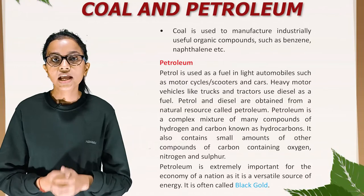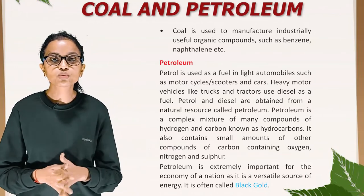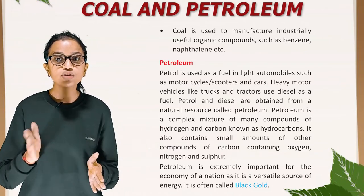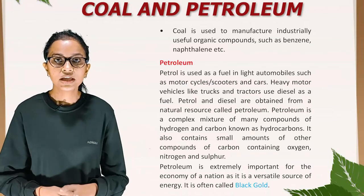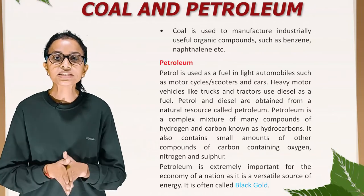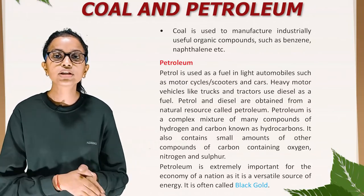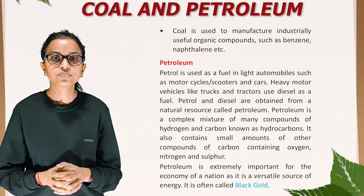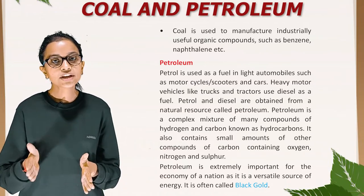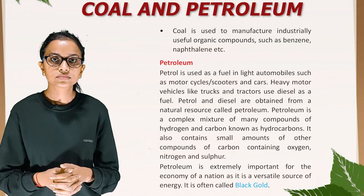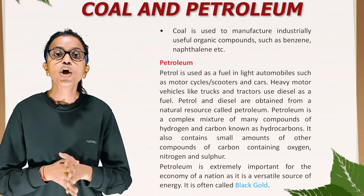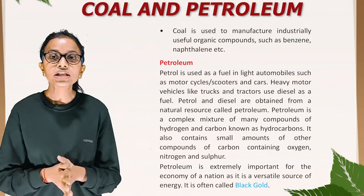Petroleum: Petrol is used as a fuel in light automobiles such as motorcycles, scooters and cars. Heavy motor vehicles like trucks and tractors use diesel as a fuel. Petrol and diesel are obtained from a natural resource called petroleum. Petroleum is a complex mixture of many compounds of hydrogen and carbon known as hydrocarbons. It also contains small amounts of other compounds of carbon containing oxygen, nitrogen and sulfur. Petroleum is extremely important for the economy of a nation as it is a versatile source of energy — it is often called black gold.